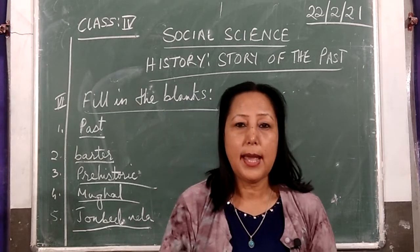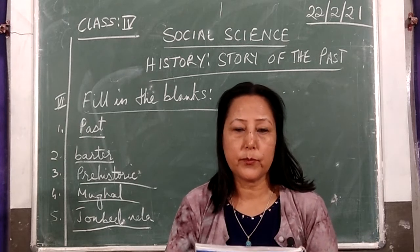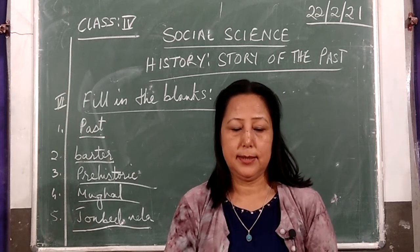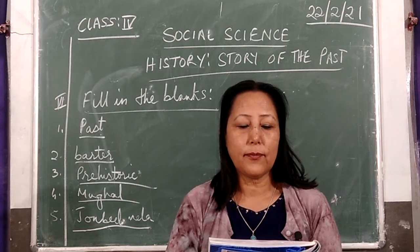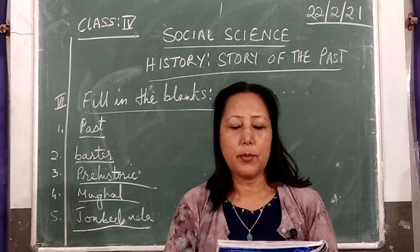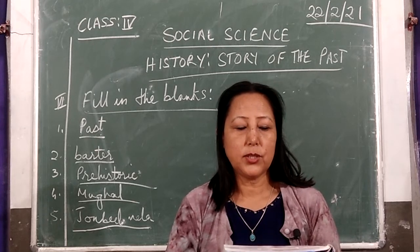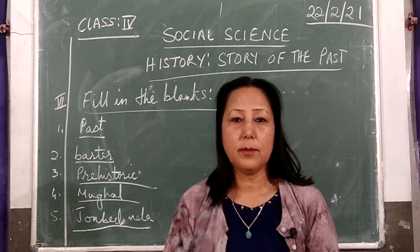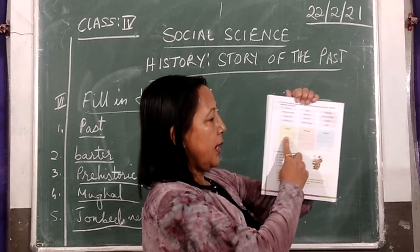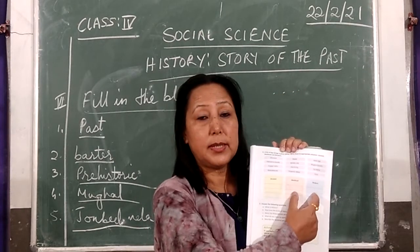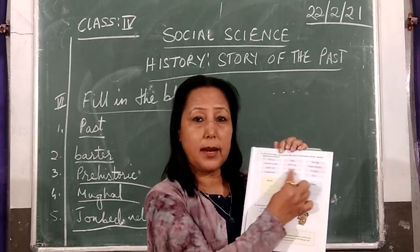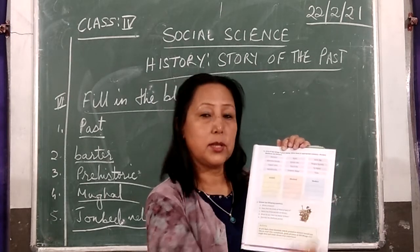Now exercise number 4, page 13. A list of a few things is given below — write them in appropriate columns: ancient, medieval, and modern. There are three groups: ancient, medieval, and modern. So you have to choose the words from there and write them in each column.